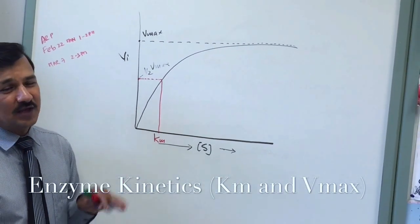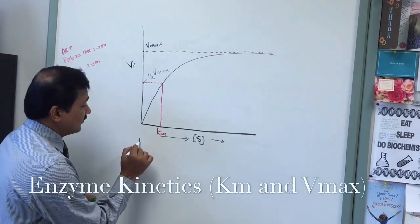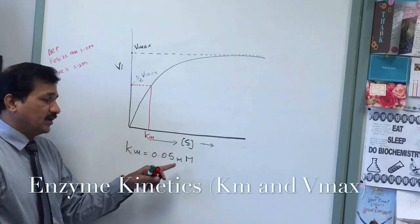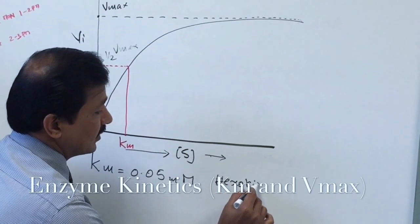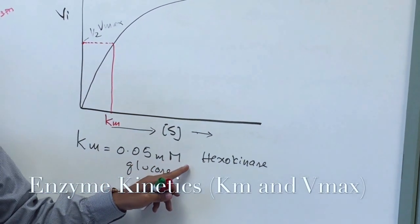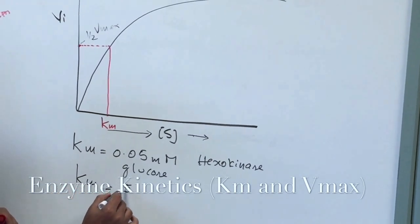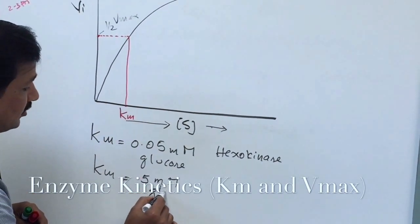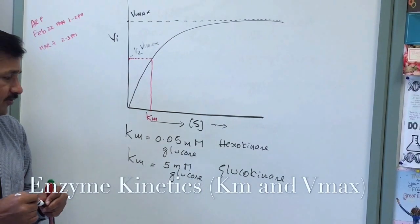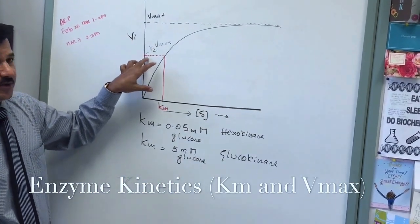KM is different for each enzyme. For example, hexokinase has a KM of 0.05 millimolar for glucose — meaning at 0.05 millimolar of glucose, hexokinase reaches half its maximum velocity. Glucokinase, on the other hand, has a KM of 5 millimolar for glucose, which is 100 times higher, meaning glucokinase only reaches half its maximum velocity at 5 millimolar of glucose.